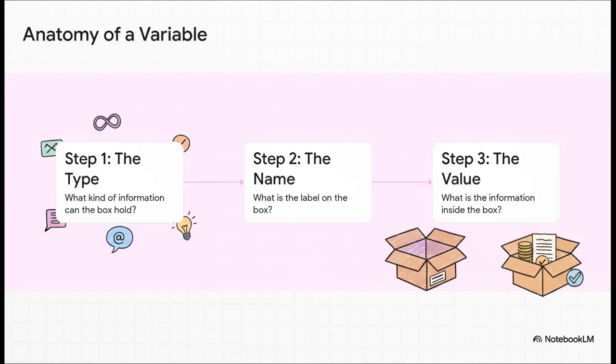First, you've got the type, which is basically telling the computer what kind of stuff can go in this particular box. Is it for numbers? Is it for text? Then you've got the name. That's the label you put on the box so you can find it again later. And finally, of course, the value. That's the actual thing you've put inside the box.